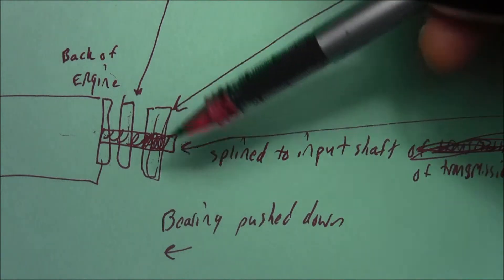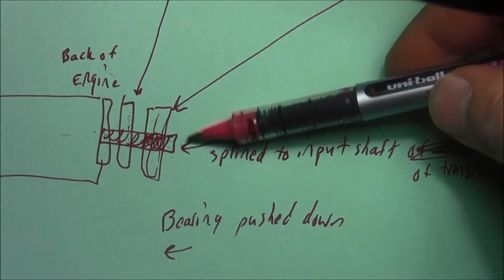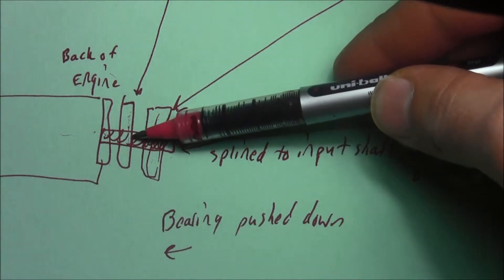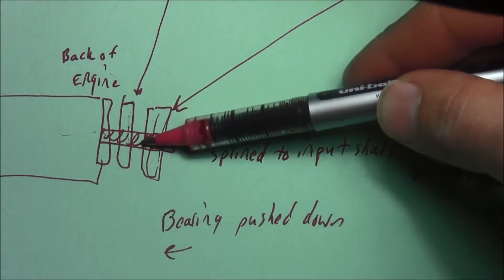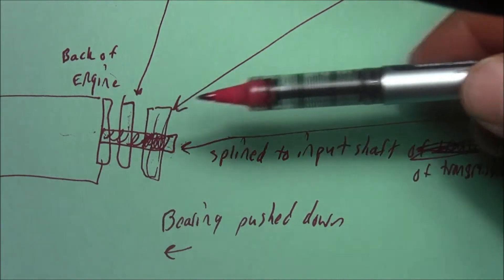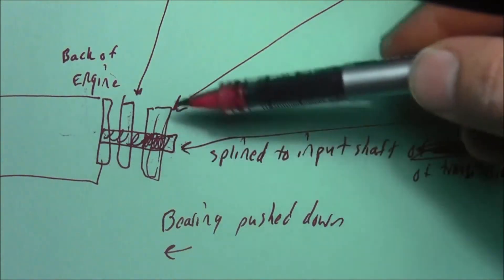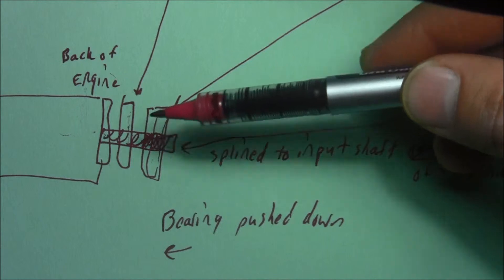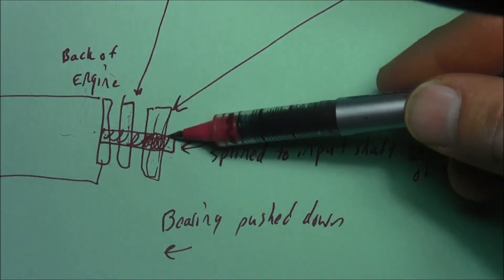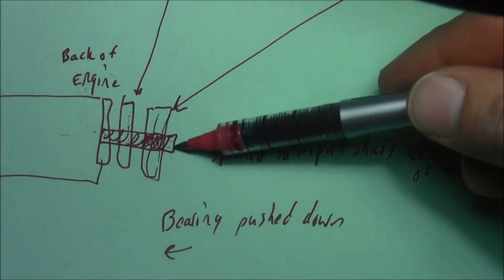Whenever the bearing is pushed down it pushes this way, which makes this come out that way. Your engine crankshaft is spinning but it's not connected. The transmission is spinning from here but it's not together.